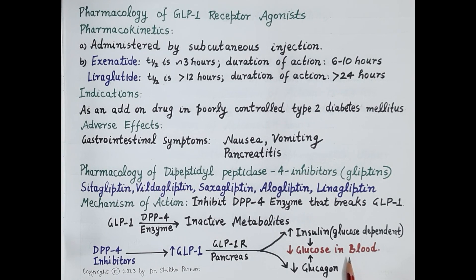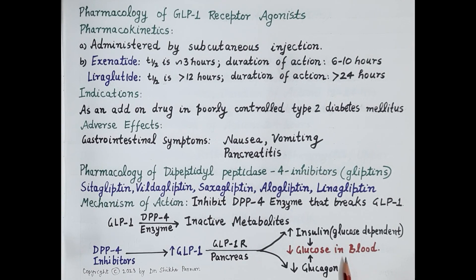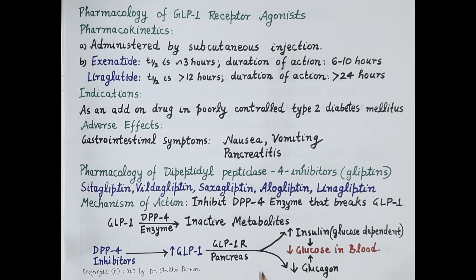These drugs also reduce glycated hemoglobin in the blood, similar to GLP-1 receptor agonists. They are also used as add-on drugs in combination with other anti-diabetic drugs for the management of poorly controlled type 2 diabetes mellitus. However, unlike GLP-1 receptor agonists, these drugs are administered orally and they do not usually cause any change in the weight of the patient.